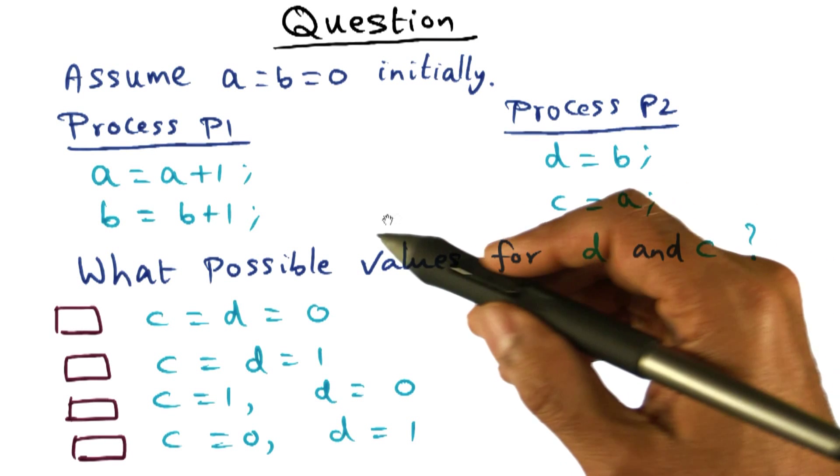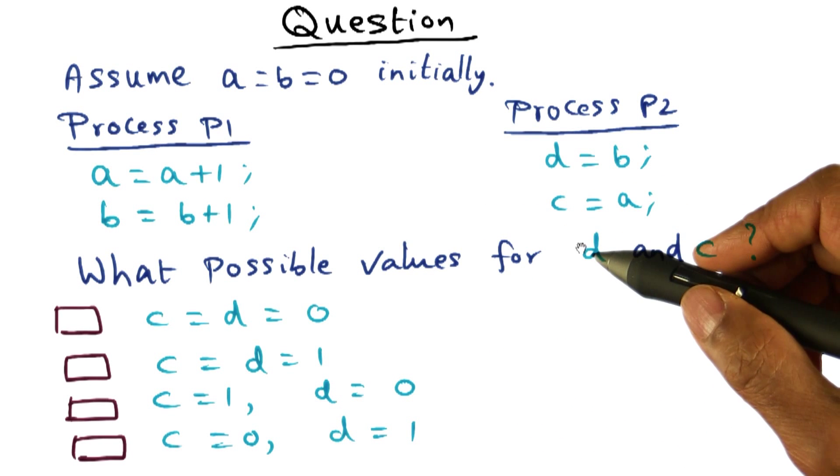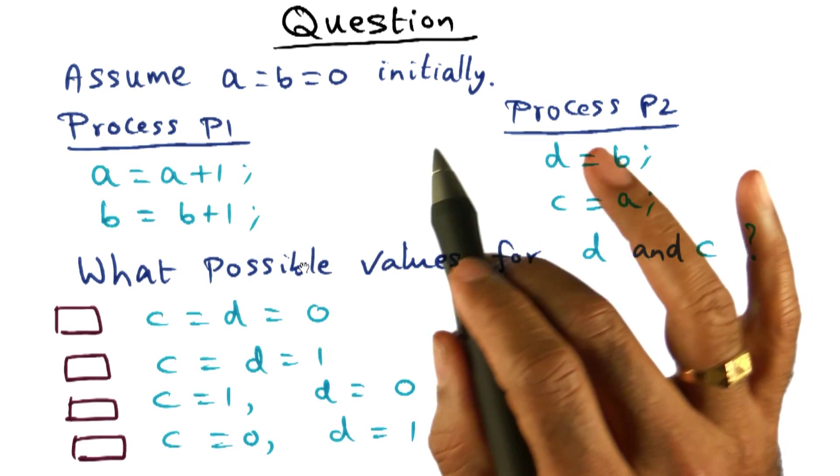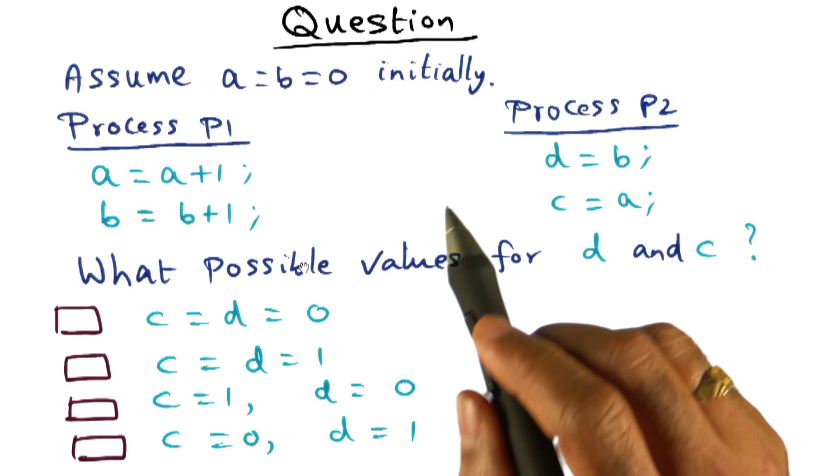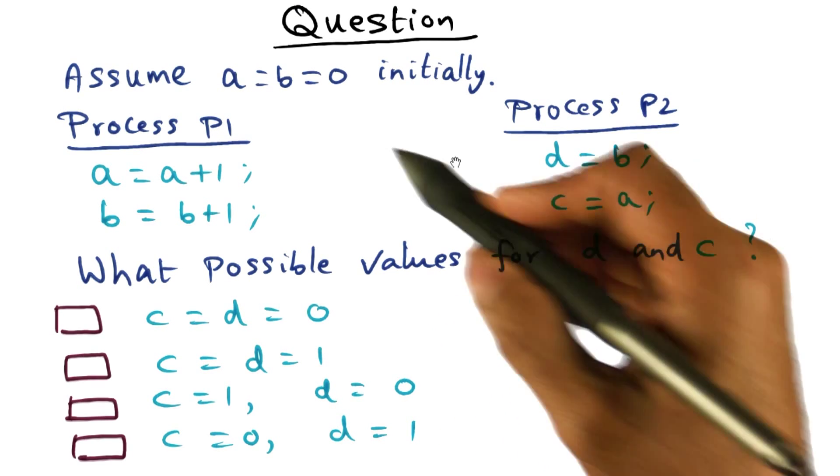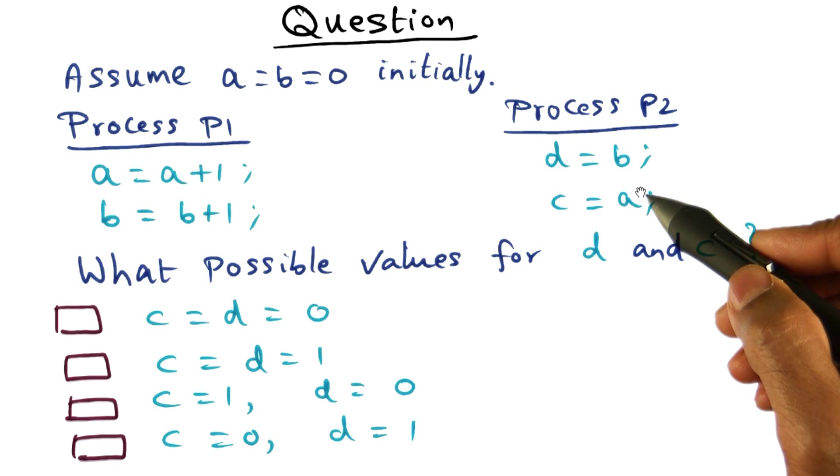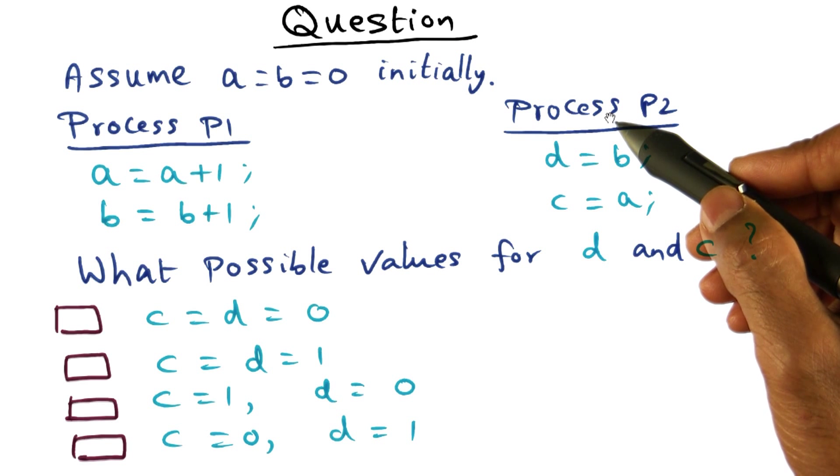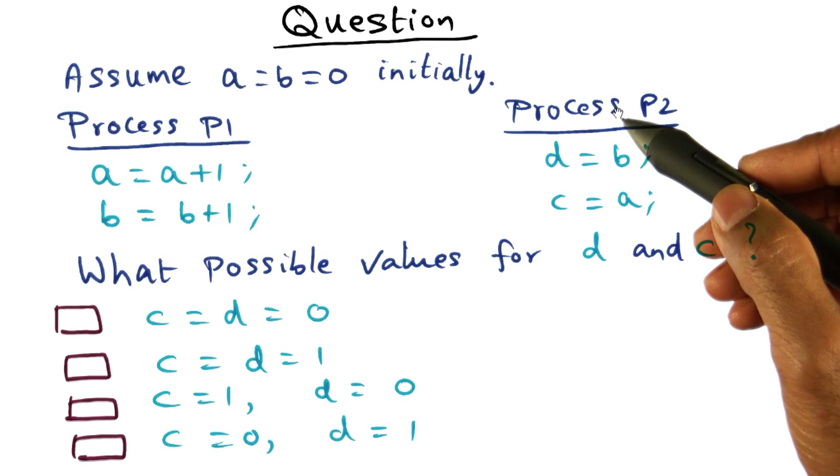Now let's talk through what possible values D and C can have. You may have picked several of these choices, but it's okay, whatever you picked. Let's talk through these different choices to see what are possible given this set of instructions and the fact that processes P1 and P2 are executing independently on two different processors.